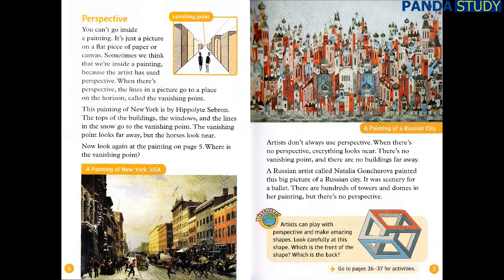You can't go inside a painting — it's just a picture on a flat piece of paper or canvas. Sometimes we think that we're inside a painting because the artist has used perspective. When there's perspective, the lines in a picture go to a place on the horizon called the vanishing point. This painting of New York is by Hippolyte Sebron. The tops of the buildings, the windows, and the lines in the snow go to the vanishing point. The vanishing point looks far away, but the horses look near.